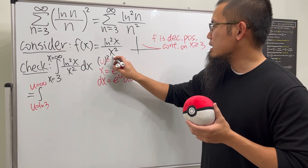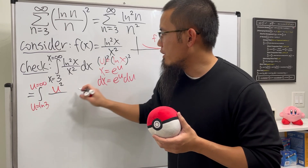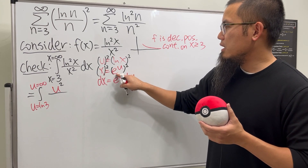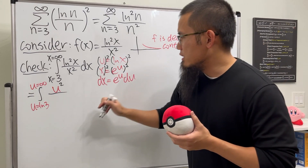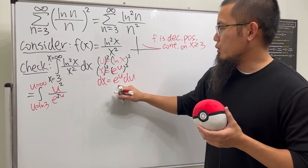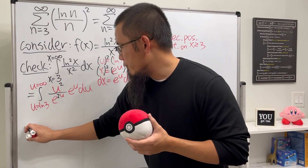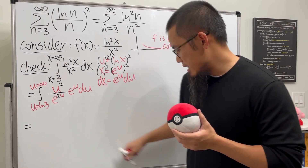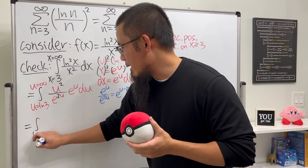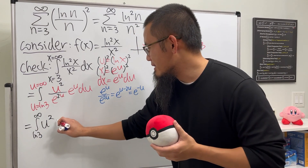Squaring both sides of u = ln(x) gives u² on top. For x², since x = e^u, we get x² = e^(2u). The dx term is e^u du, so those simplify: e^u / e^(2u) = e^(-u). The integral becomes the integral from ln(3) to infinity of u² · e^(-u) du, which is a nice case for integration by parts.